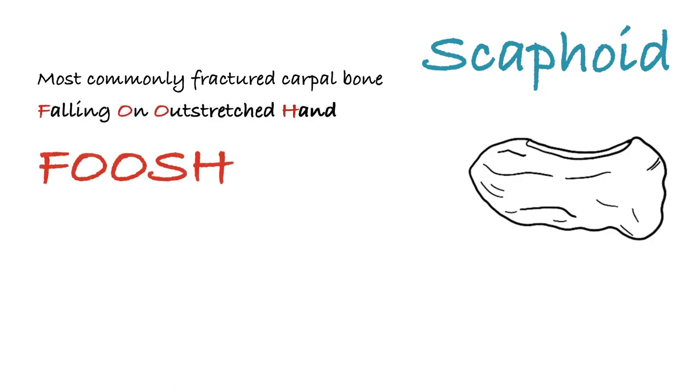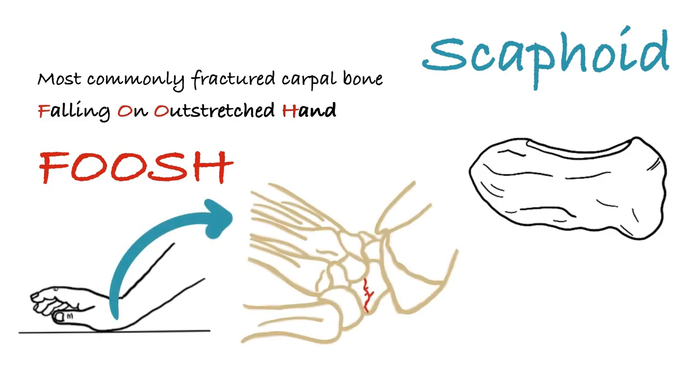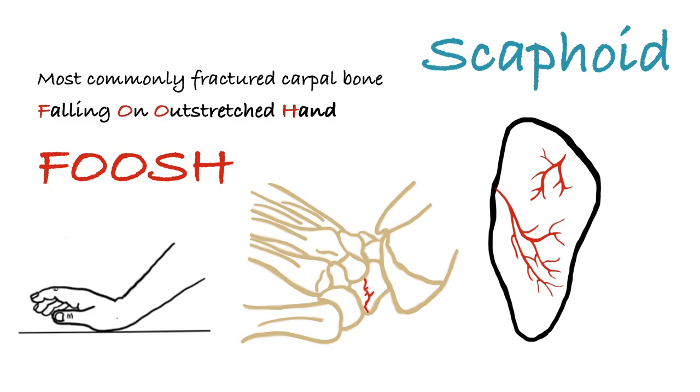FOOSH injury—falling on outstretched hand. Initial MRI may not reveal scaphoid fracture. After two or three weeks later, the incident fracture site reveals due to bone resorption because of poor blood supply to the proximal part of the scaphoid. Healing process takes long time if there's not enough blood supply during the process. Even avascular necrosis of proximal fragment of the scaphoid may develop.